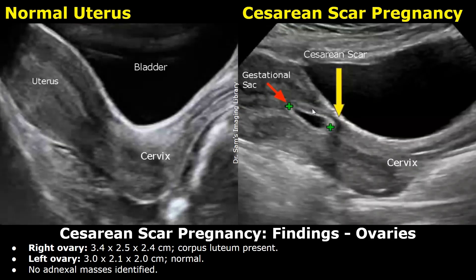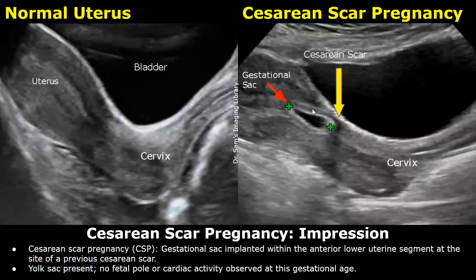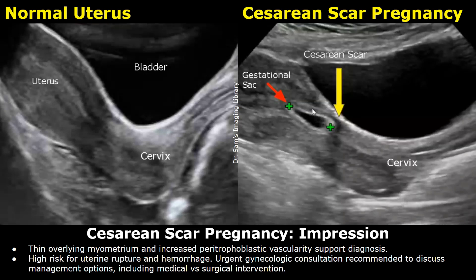The ovaries are normal. Impression: cesarean scar pregnancy. Gestational sac implanted within the anterior lower uterine segment at the site of a previous cesarean scar. Yolk sac present. No fetal pole or cardiac activity observed at this gestational age. Thin overlying myometrium and increased paratrophoblastic vascularity support the diagnosis. High risk for uterine rupture and hemorrhage. Urgent gynecologic consultation recommended to discuss management options, including medical versus surgical intervention. Thank you so much for watching. Stay tuned for more imaging videos.